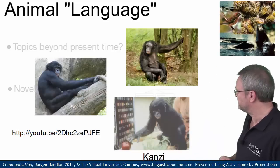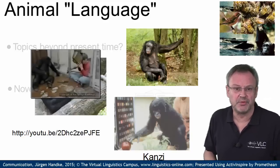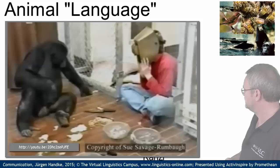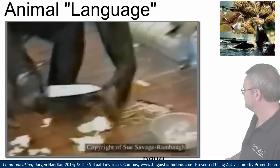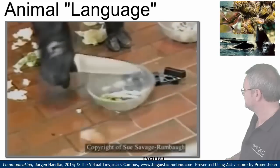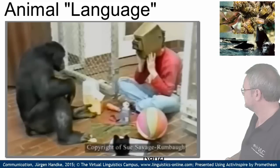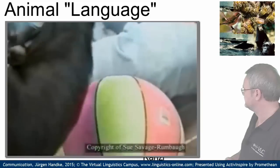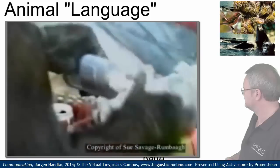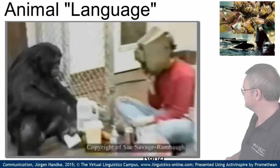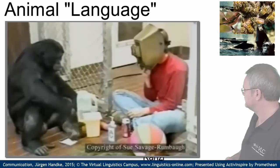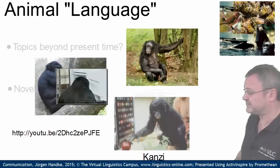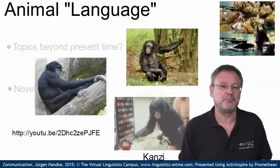Here is an example from Kanzi, probably the world's most intelligent Bonobo. In the demonstration, Kanzi is asked to cut the onions with his knife, put some soap on his ball, and put the pine needles in the refrigerator — all of which he successfully carries out. Impressive, isn't it? But still rudimentary compared to human language.